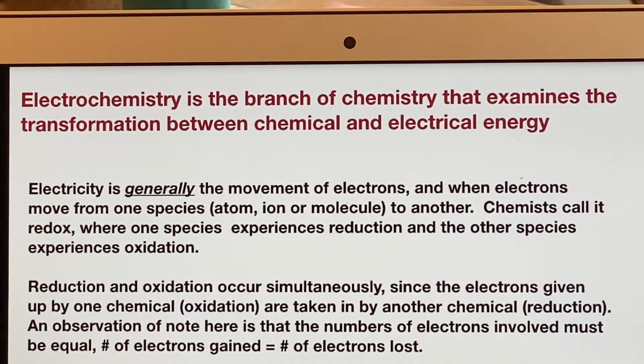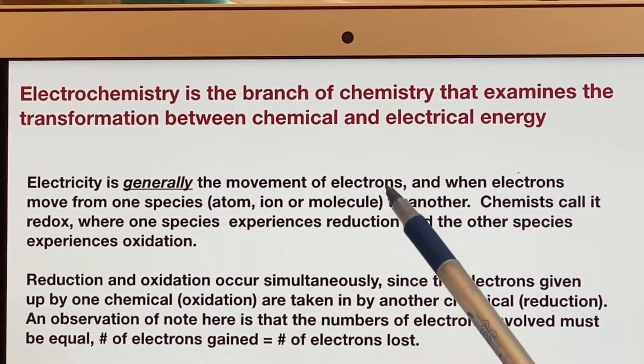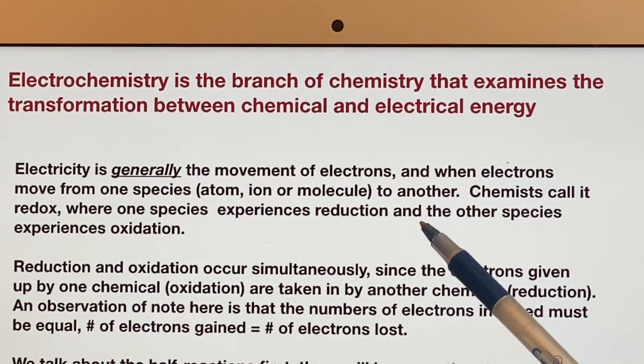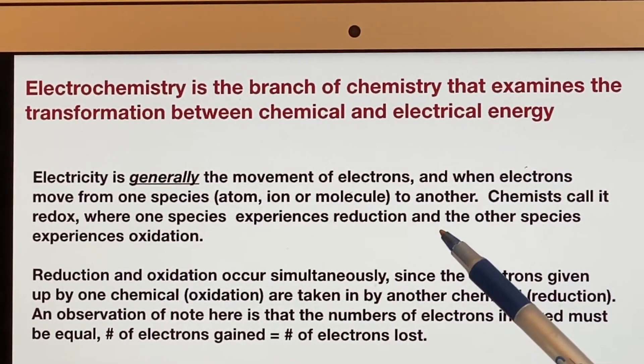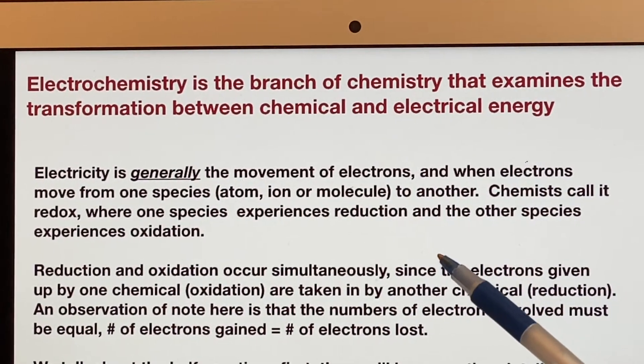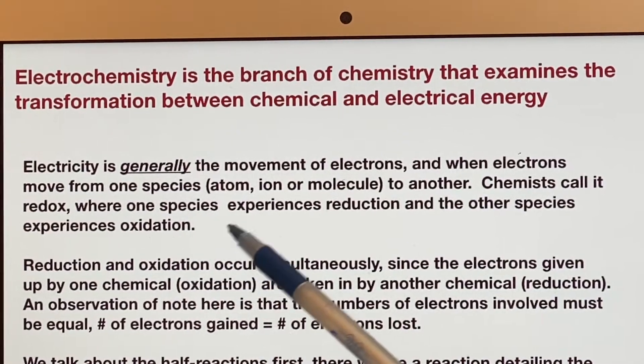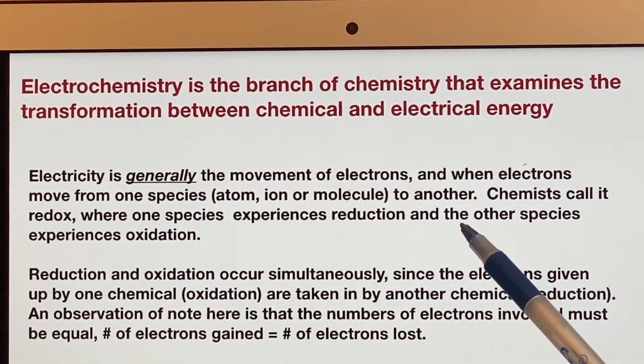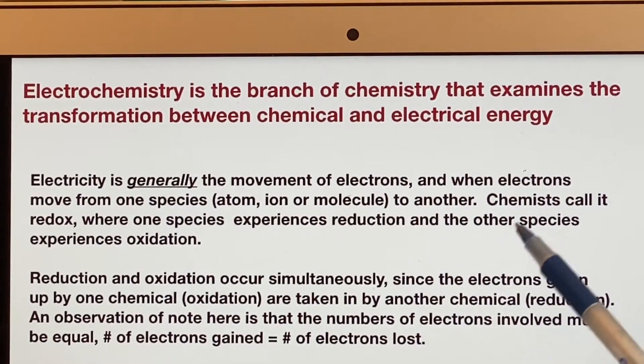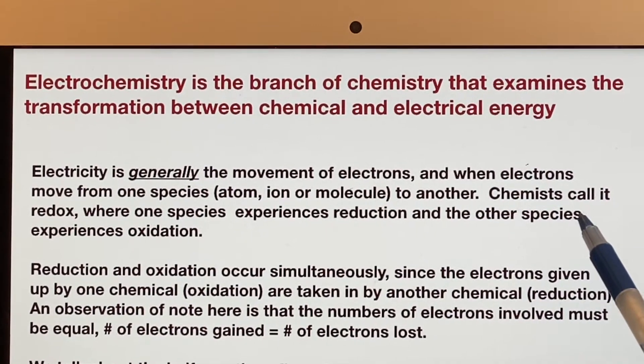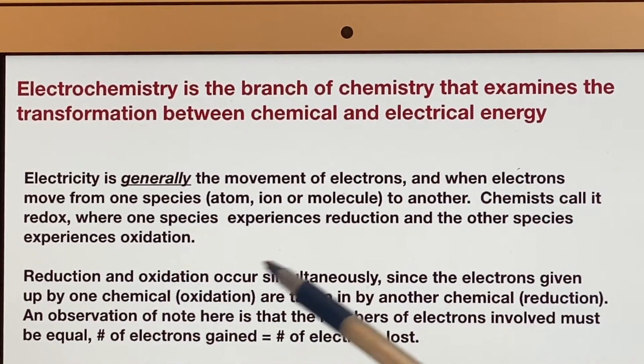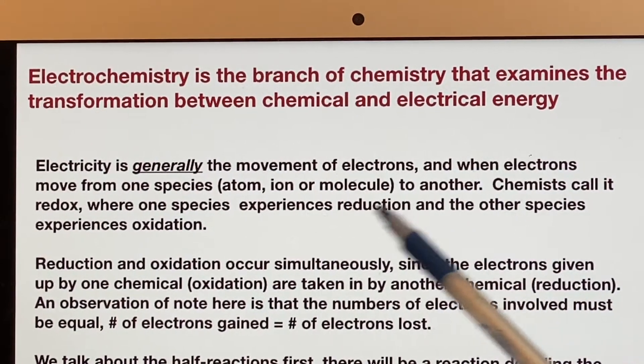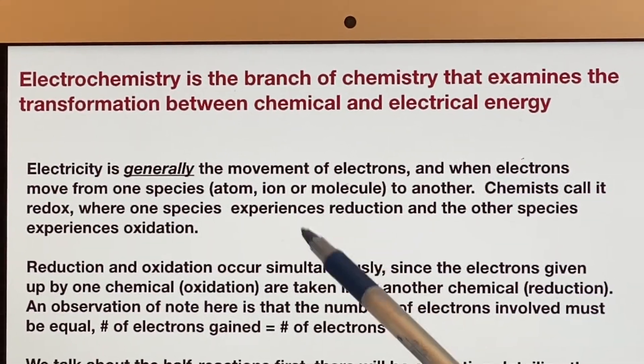Electricity is generally the movement of electrons. We can also do this by moving other ions, but electrons are very small, they're very light, and they're a lot easier to move than a big fat ion. So when the electrons move from one species to another, we could call that some sort of motion of electricity, and we're trying to make sure that it gets separated and goes and does honest work. Chemists call this whole thing redox instead of calling it electricity, because they know that if one species is experiencing reduction, the other is experiencing oxidation.